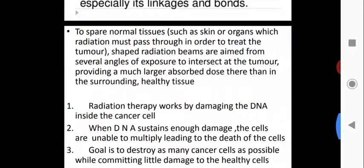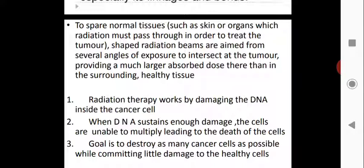To spare normal tissues such as skin and organs which radiation must pass through, shaped radiation beams are aimed from several angles of exposure to intersect at the tumor, providing a much larger absorbed dose there than in the surrounding healthy tissue. The radiation is concentrated on the particular area where the tumor is, such as the liver, so it does not cause side effects to other areas. If radiation is exposed to healthy tissue it can cause a reverse, harmful effect.